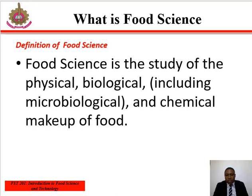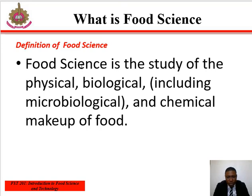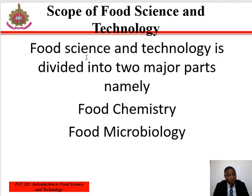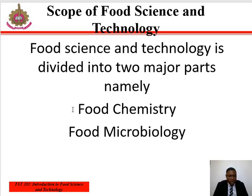What is food science? Food science is a study of the physical, biological — including microbiological — and chemical make-up of food. The two main areas are food chemistry and food microbiology.